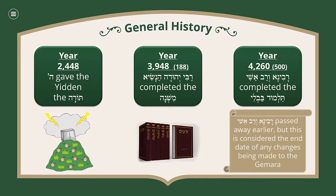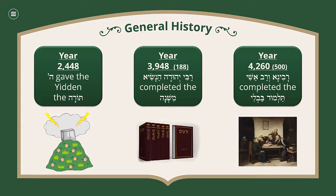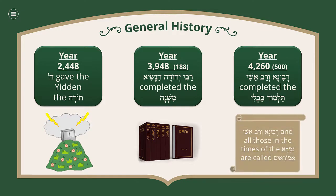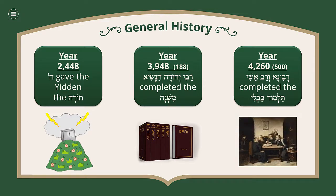but this is considered the end date of any changes made to the Gemara. Another thing to point out is that Ravina and Ravashi and all those in the times of the Gemara are called Amoraim. In the year 3948 it says 188, and in the year 4,260 it says 500 — those are the English dates.